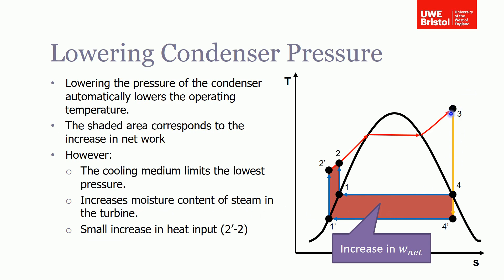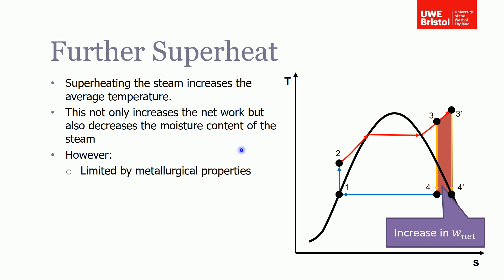Additionally, keeping all things the same, lowering the condenser pressure increases the moisture content of the steam in the turbine. Without more superheat, we've moved from dry steam to wet steam going into our turbine. If the pressure were dropped even further, there would be even more moisture in the steam turbine, which isn't good from a corrosion point of view. Overall though, reducing the condenser pressure is a positive change as it increases the net work from the Rankine cycle.